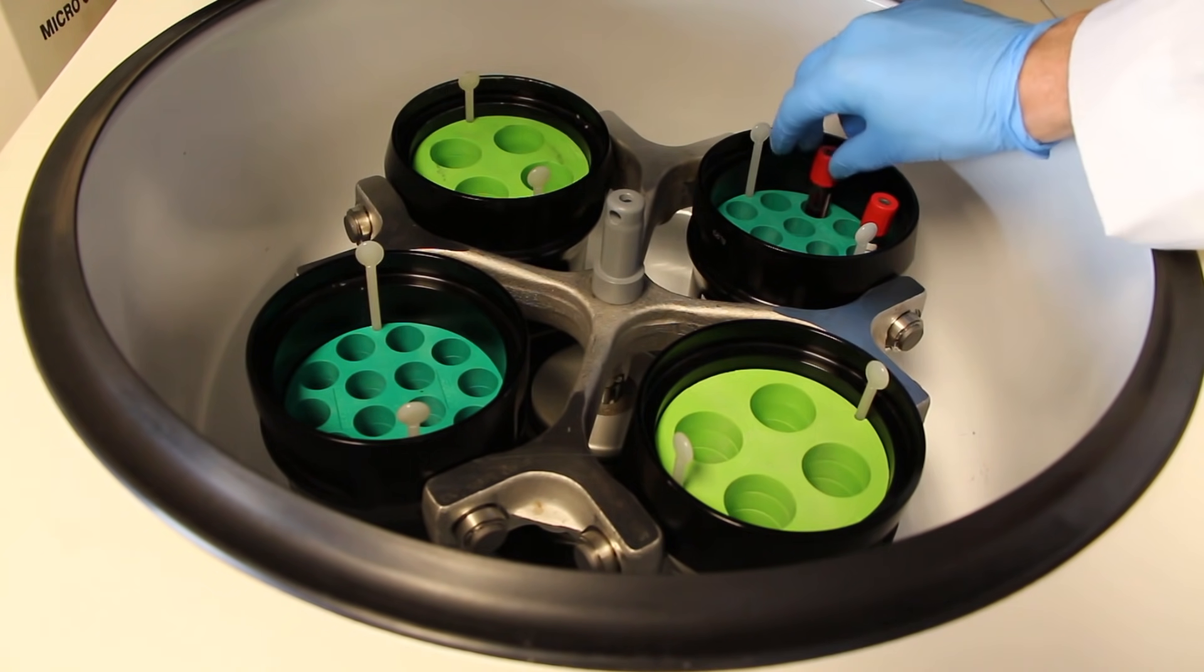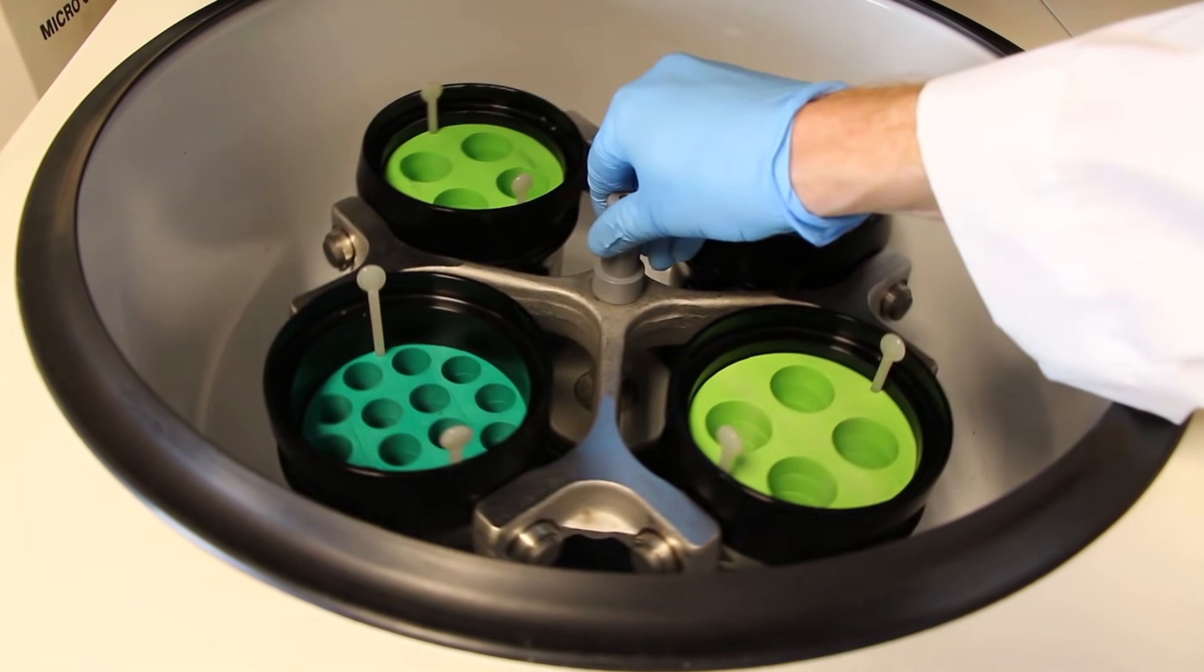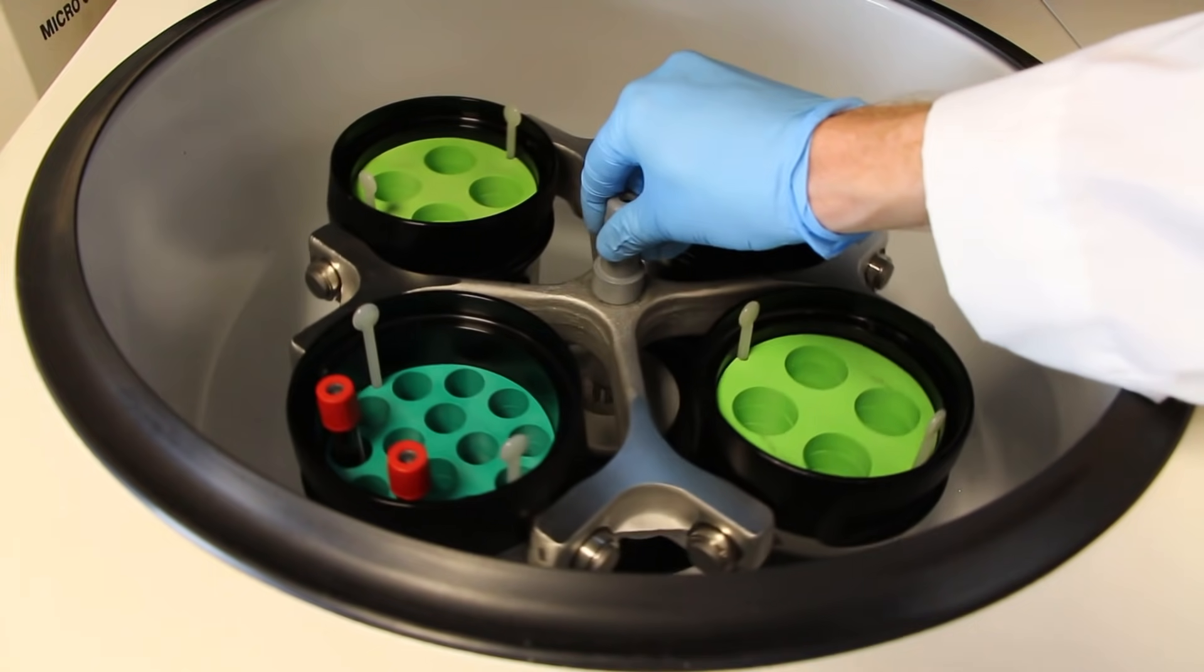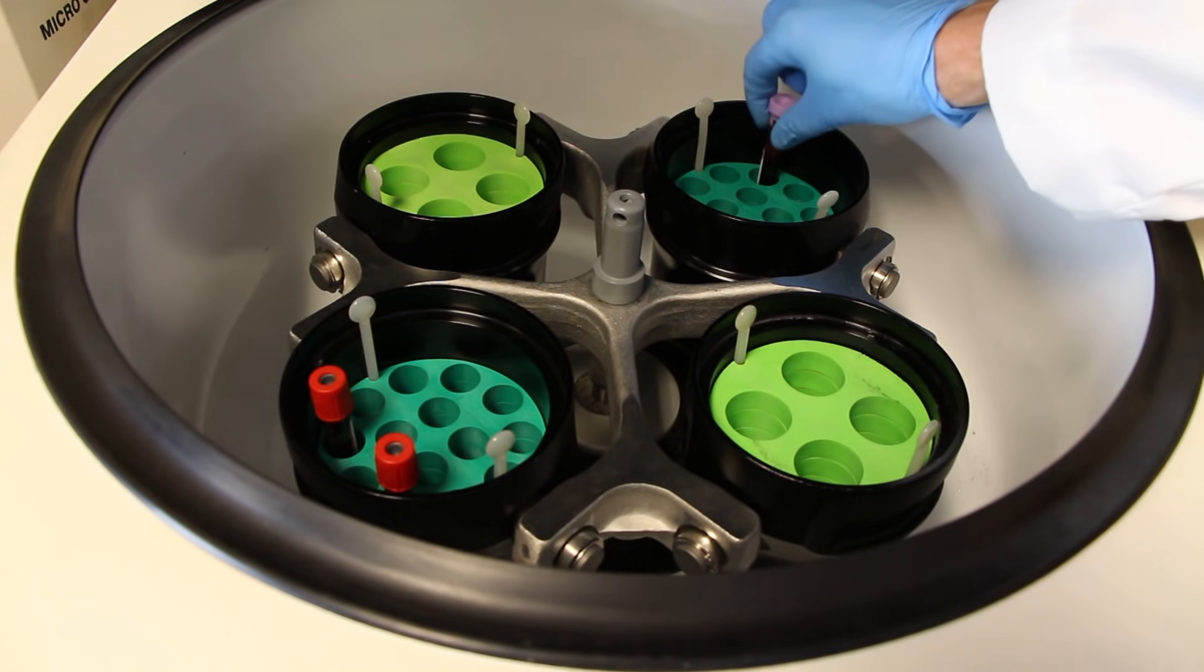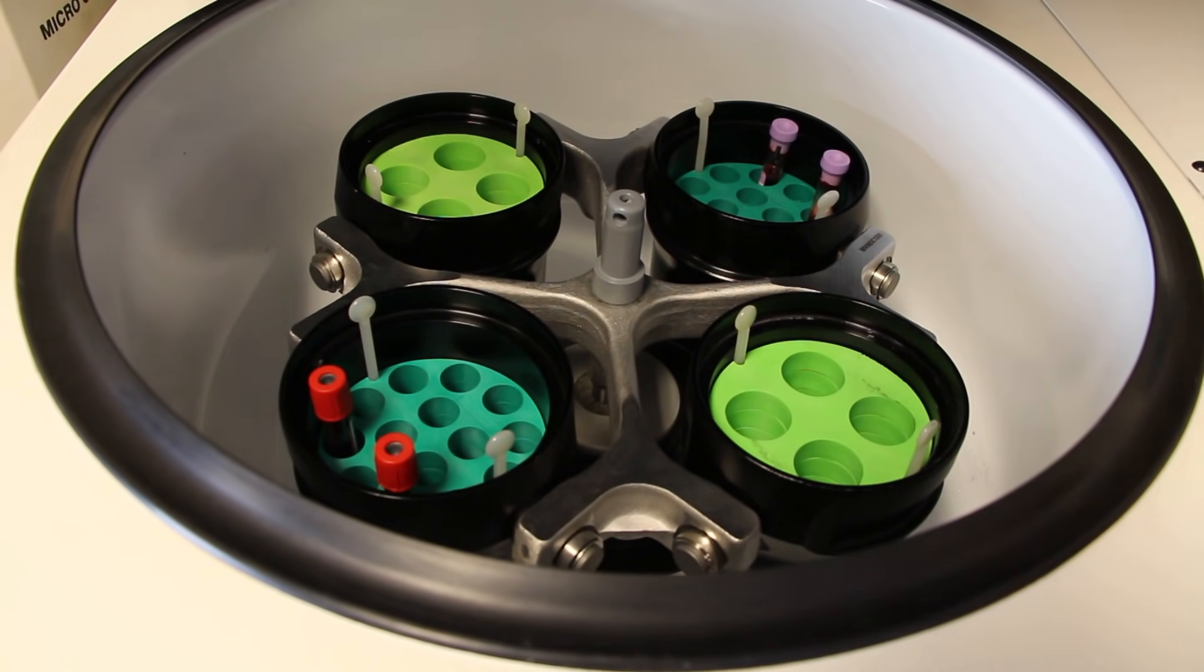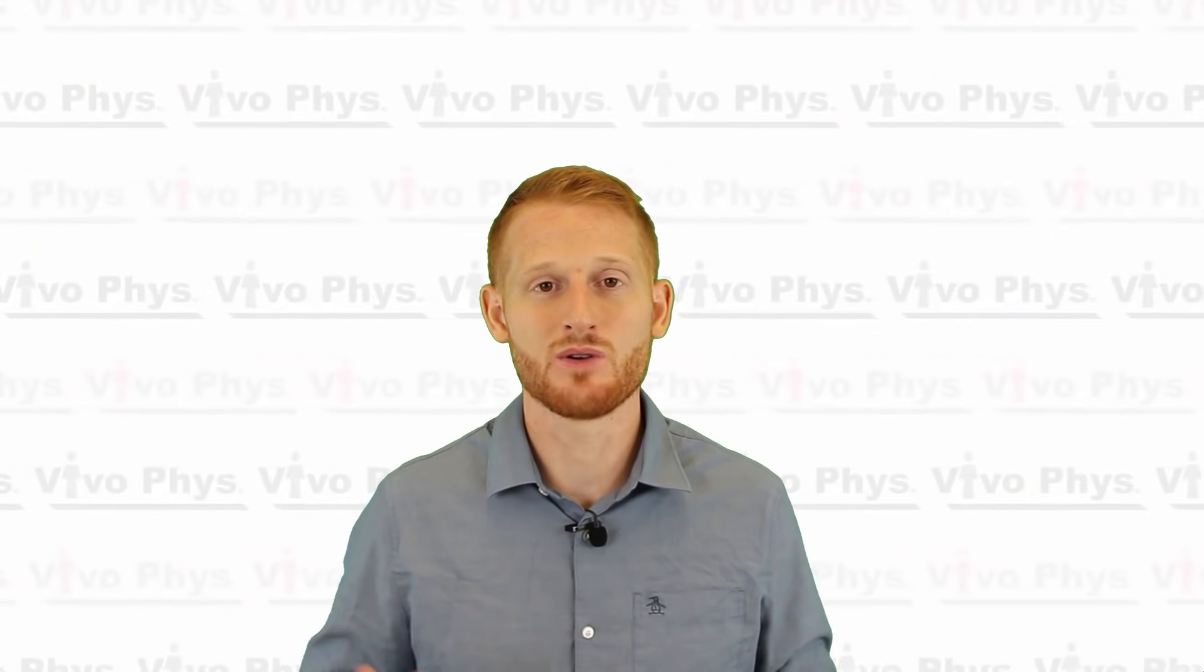The other thing you need to do when you're putting the tube inside the centrifuge is try to disperse them in such a way or to place them in there in such a way that they are balancing each other and their weights. So if you have one over here, have one over there, so that when it's spinning it's going to have the same amount of weight on both sides of the inside of that centrifuge and it's going to promote an even spinning.